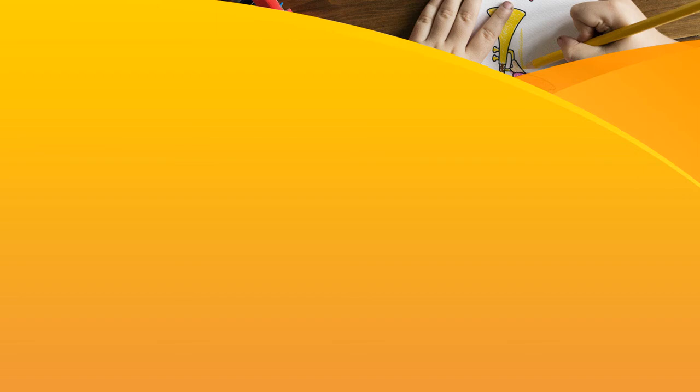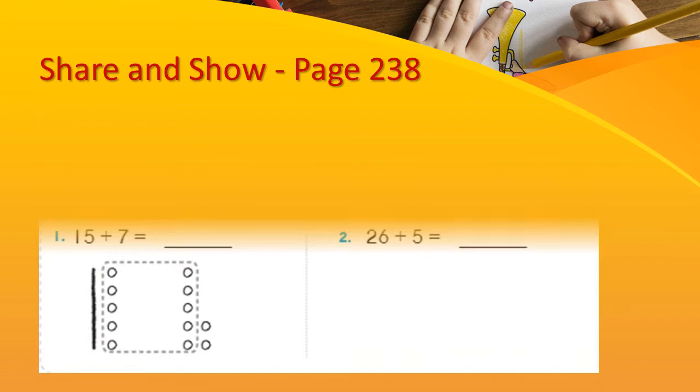Now let's look at share and show. Open page number 238. Draw quick pictures. Break apart ones to make a 10. Then add and write the sum. How many more ones are needed to make 15 a tens number? 5 more ones are needed to make 15 a tens number. So we are going to break apart 7 to get 5 ones.